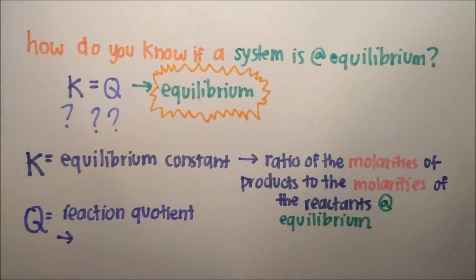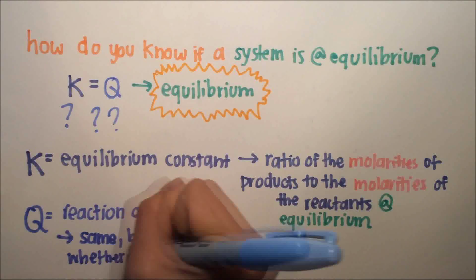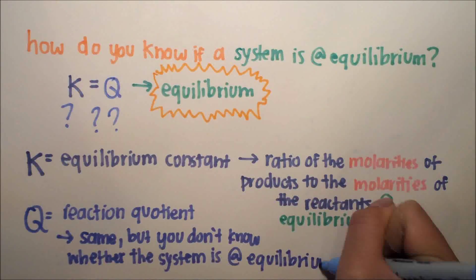Q is the reaction quotient, and this is different because it's not at equilibrium, but it's calculated the same way as K.